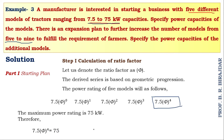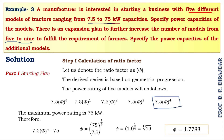Rearranging: φ = (75 ÷ 7.5)^(1/4). This gives us the ratio factor φ = 1.7783. Finding the ratio factor is the first important step, and once we have it, we can find all the different models.